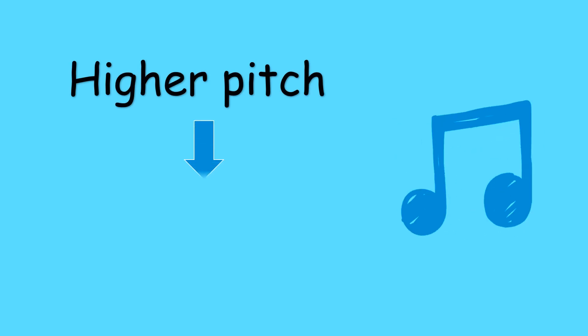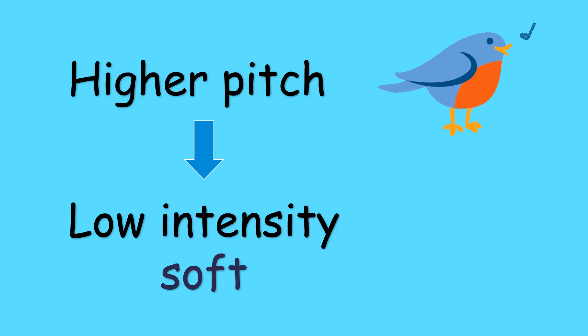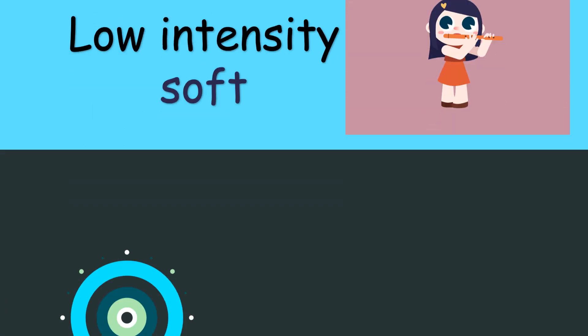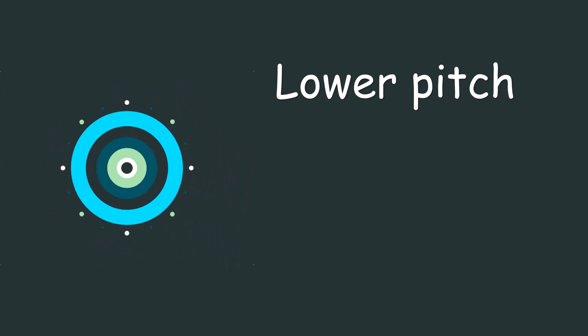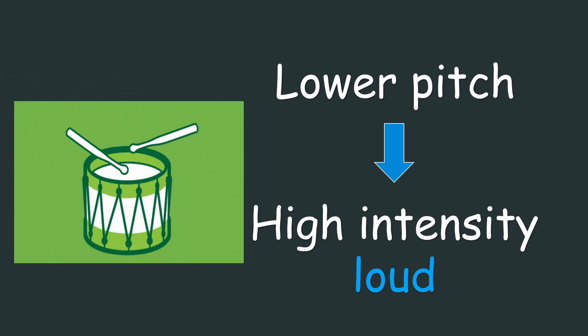Always remember, a sound with a high intensity is not the same as a sound with a high pitch. A sound with a high pitch can have a low intensity or soft sound. For example, sounds made by a bird chirping softly or a flute playing gently have a high pitch but low intensity. A sound with a low pitch can have a high intensity or loud sound. For example, the sound made by a bass drum has a low pitch but can be at high intensity when the drum is struck very hard.